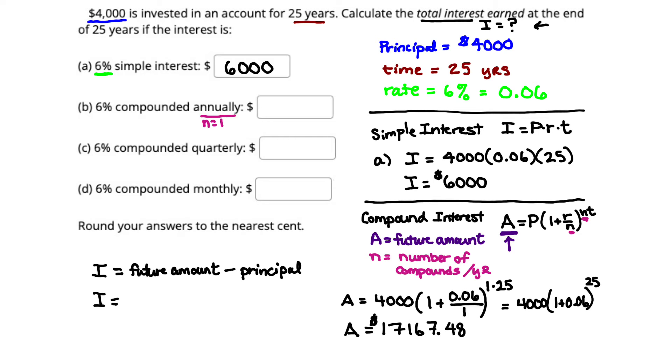So to get the interest earned for Part B, we're simply going to take our future amount, which is $17,167.48, and we're going to subtract off our principal, our principal being $4,000. So when we take that amount, $17,167.48, and we subtract off our $4,000, that tells us that we have a remaining interest, or a remaining amount, of $13,167.48. That right there is our amount of interest, and that's what goes in the blank. The future amount, subtract off our principal. So we would say that if we were investing this money at 6% compounded annually, we would wind up earning $13,167.48 in interest.